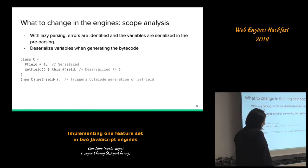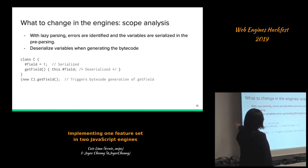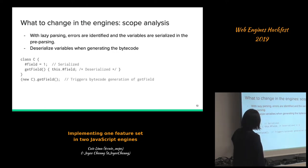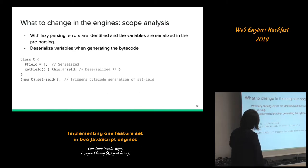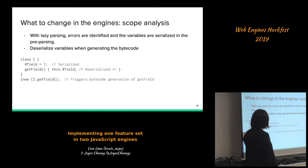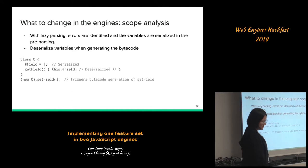Both JavaScriptCore and V8 have lazy parsing. With lazy parsing, errors are identified and variables are serialized on the first pass. When we parse the class for the first time, the hash field's private name is serialized, but we don't emit code for the method body yet. We only generate code for methods when they are actually invoked, triggering bytecode generation. At that point we need to deserialize the private names from the scope, which adds some complexity.